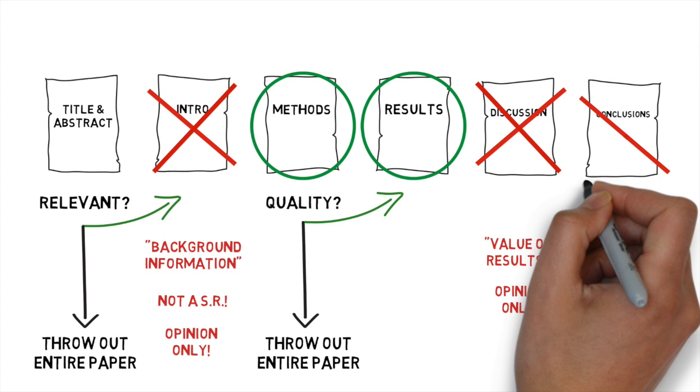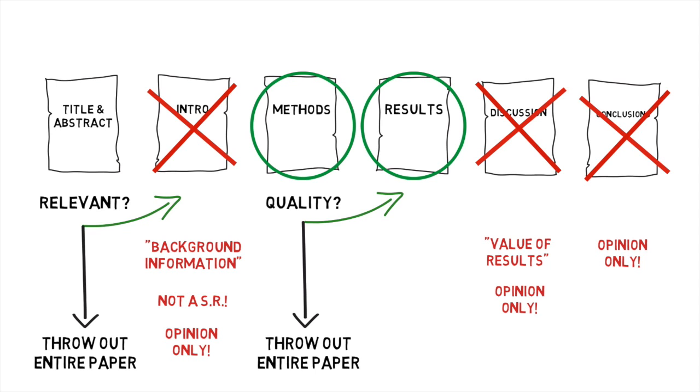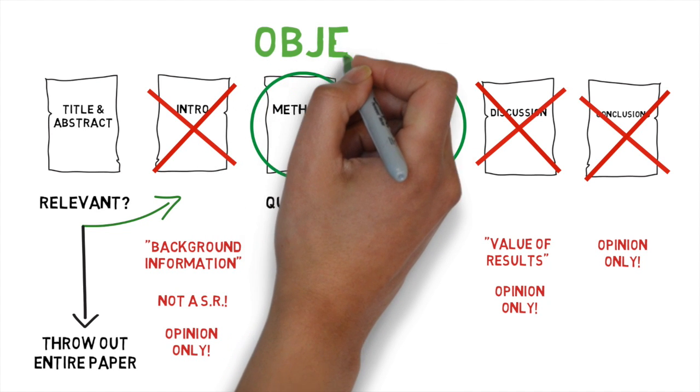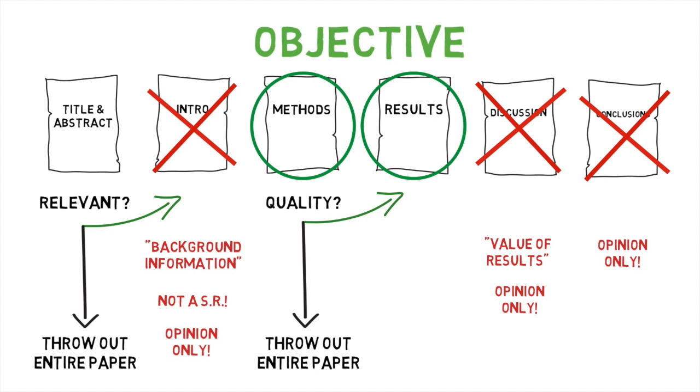At the end of the day, there are really only two parts of the research paper that should be mostly objective. The methods section, and the results section. Sadly, all the other sections are highly edited and likely to be peppered with bias.